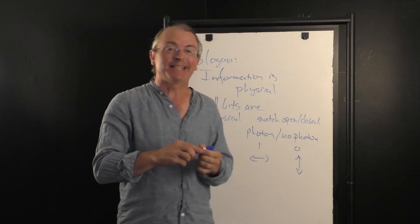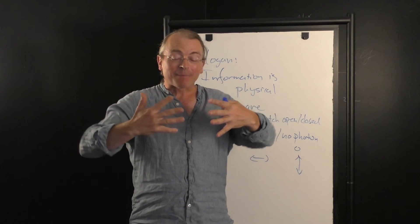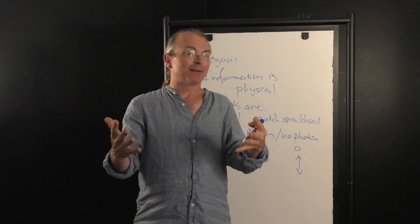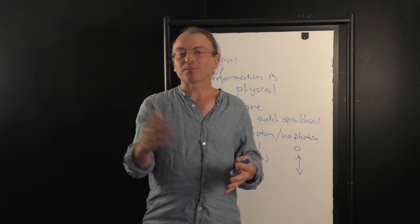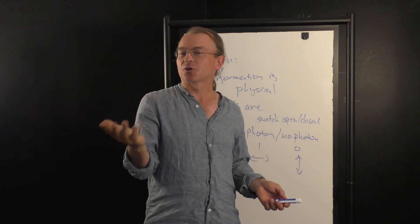Whenever a bit exists in the world, it is actually represented by a physical object that has two different possible states - like a coin, which can be heads or tails.